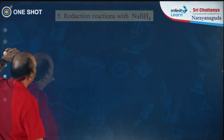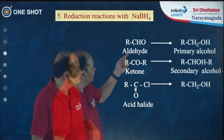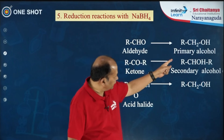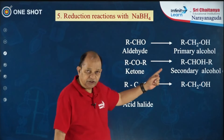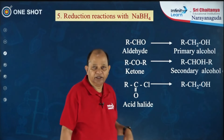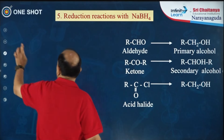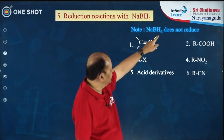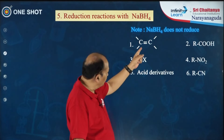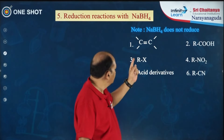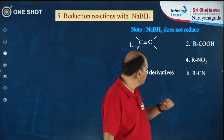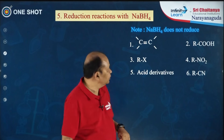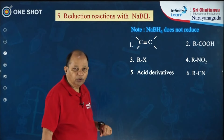The next reagent is sodium borohydride (NaBH4) — it is a milder reagent compared to LiAlH4. Aldehyde converts to primary alcohol, ketone converts to secondary alcohol, and acid halide converts to primary alcohol. Importantly, sodium borohydride does not reduce carbon–carbon double bonds, carboxylic acids, alkyl halides, nitroalkanes, acid derivatives, or alkyl cyanides.